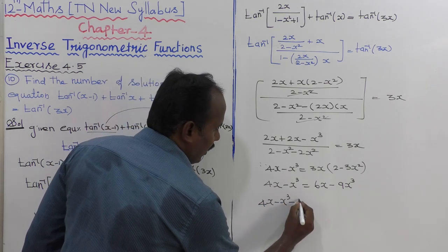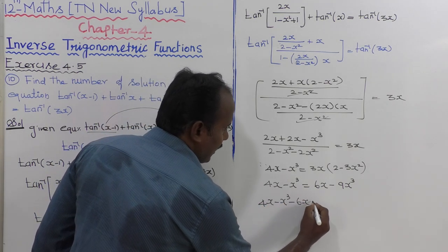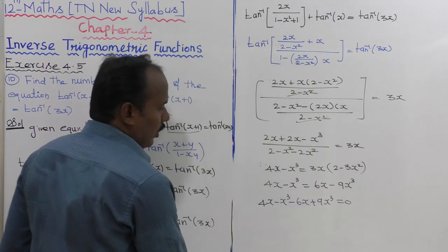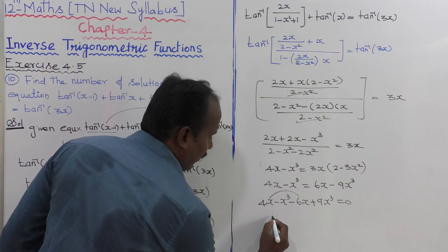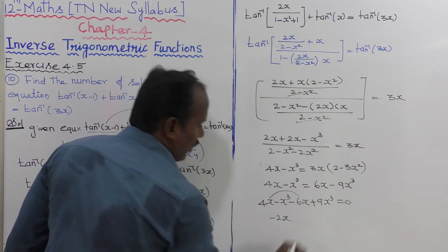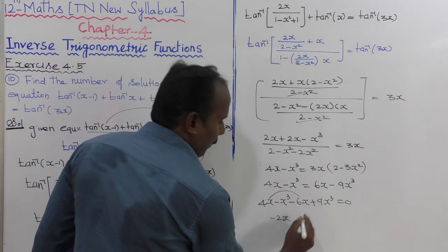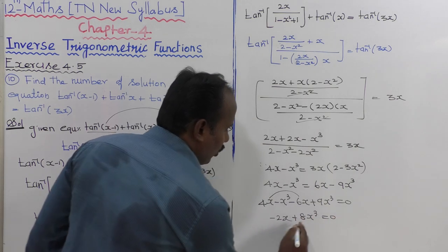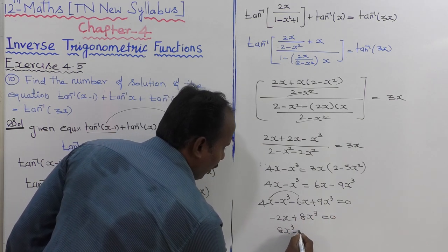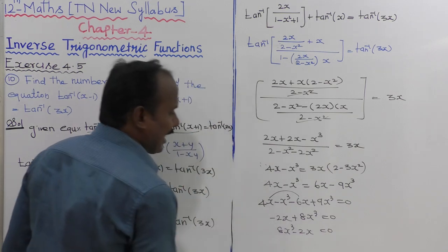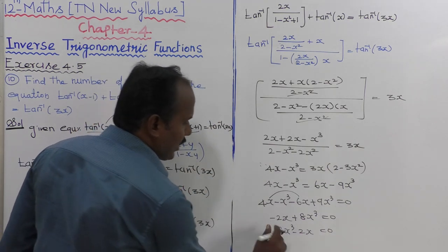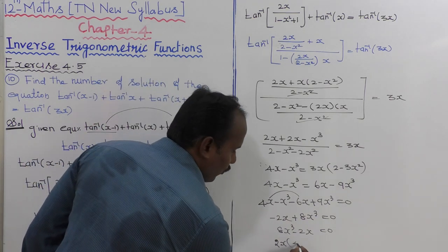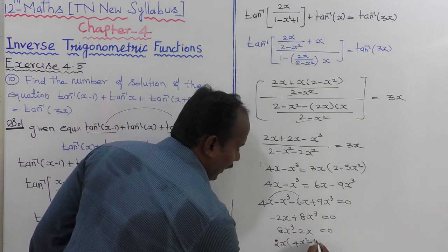Moving all terms to the left side: 4x minus x cubed minus 6x plus 9x cubed equals 0, which simplifies to 8x cubed minus 2x equals 0. Taking 2x as a common factor: 2x(4x squared minus 1) equals 0.